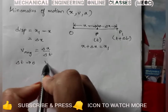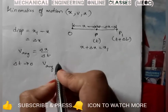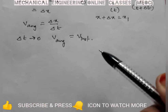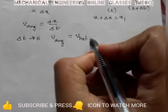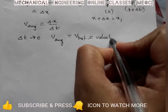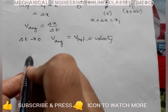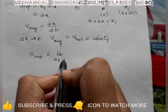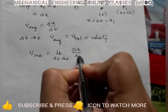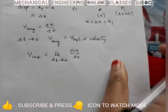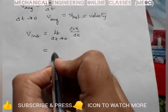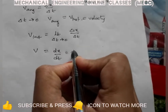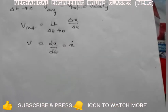As delta t tends to 0, v average becomes instantaneous velocity. This instantaneous velocity is usually called simply velocity. So v instantaneous equals the limit as delta t tends to 0 of delta x by delta t, which can be written as v equals dx by dt — the first derivative of x with respect to time.